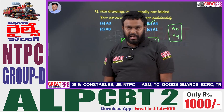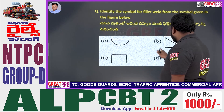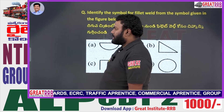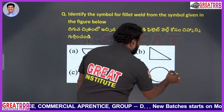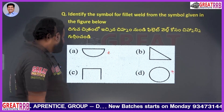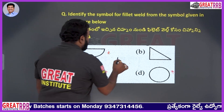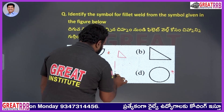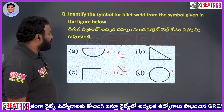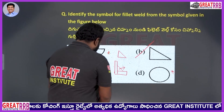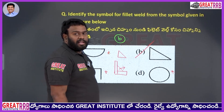Identify the fillet weld from the symbol given in the figure. In welding, circular or rectangular welds are not used. A corner, chamfer, or fillet weld is shown with two plates welded together. The fillet weld symbol is always in the form of a triangle. Option B will be the right answer for the given question.